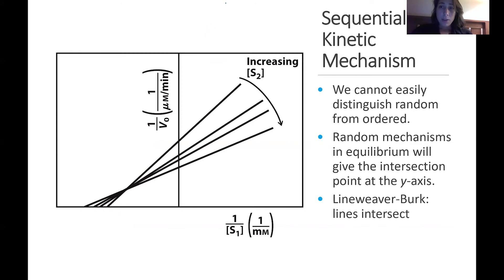The reason we use the Lineweaver-Burk plot when looking at things like a sequential mechanism or an inhibitor mechanism is because it's easy to see how the changing of a linear line up and down relates to a type of mechanism. And these can be much more easily distinguished with this type of plot versus our other plot.